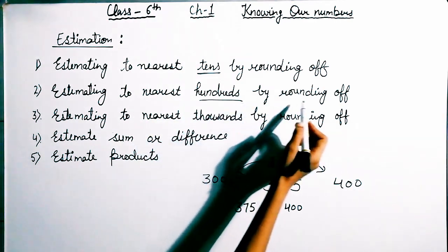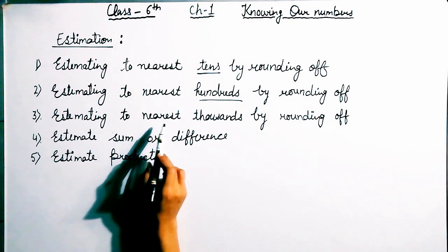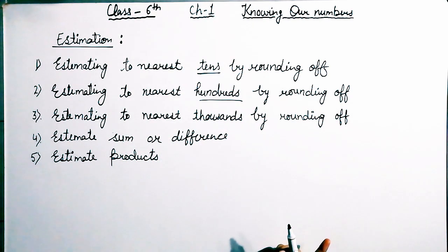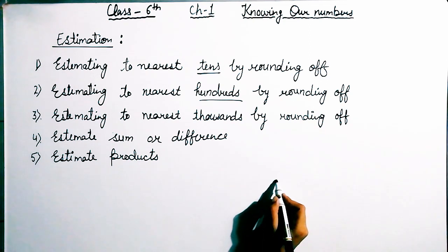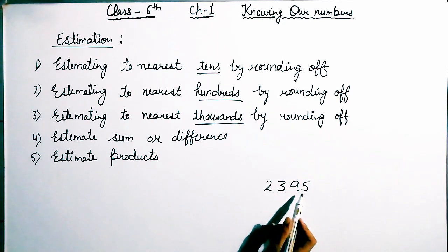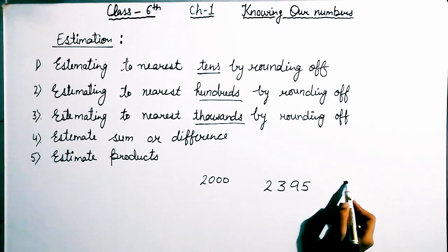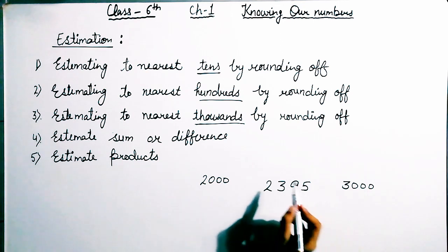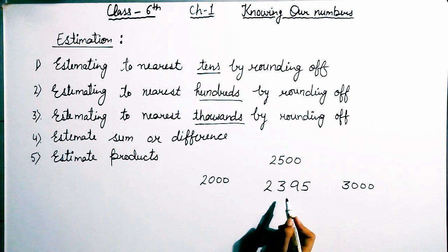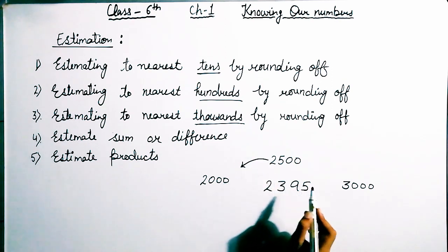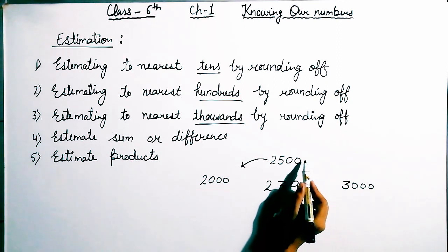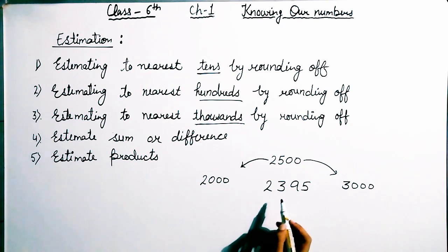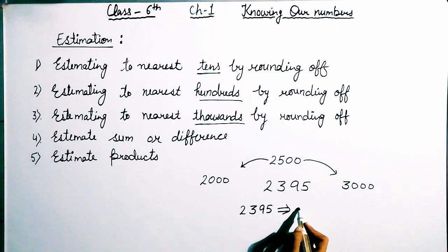Our third part is estimating to the nearest 1000 by rounding off. Our number is in the thousands category. I am taking the example 2395. So 2395 is lying between 2000 and 3000. The equal midpoint estimation is 2500. Since 2395 is less than 2500, it is nearer to 2000. So the rounding off of 2395 to the nearest 1000 is 2000. This was your third part.